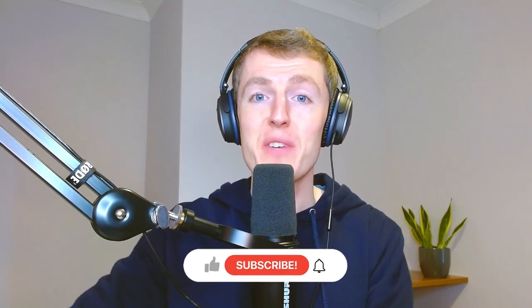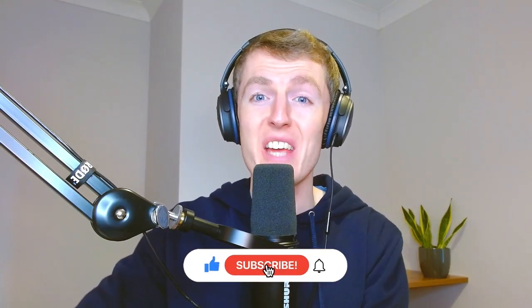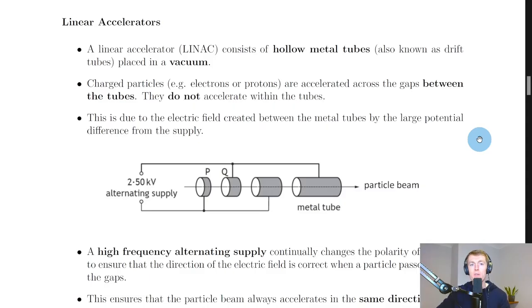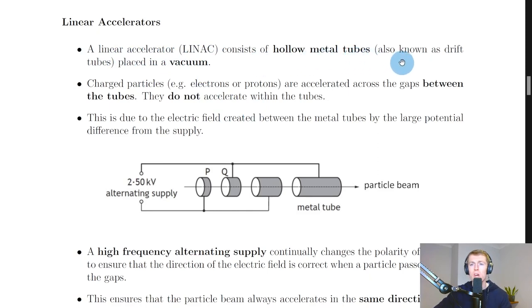Welcome back. In this video we're going to look at our second type of particle accelerator: the linear accelerator, or linac. It's common to see a question on linear accelerators in the exam. These can be shortened to 'linac' — 'lin' from linear and 'ac' from accelerator. A linear accelerator consists of hollow metal tubes, also known as drift tubes, placed in a vacuum.